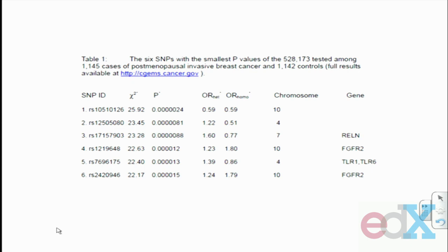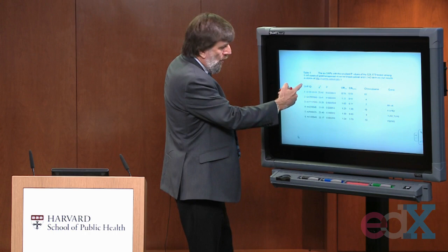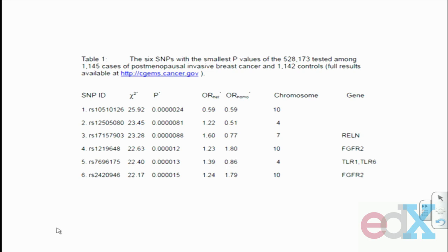One cluster immediately attracted interest because it appeared to be in a gene called fibroblast growth factor receptor 2 (FGFR2). Anyone interested in oncology will know that anything called a growth factor receptor immediately attracts interest when studying cancer causation. In the replication phase, we initially took only a very small number of these variants — 6 in fact — representing the chromosome 10, 4, and 7 initial hits. These IRS numbers are just the codes each variant in the genome is given; you can ignore them.